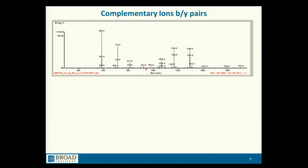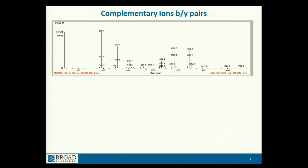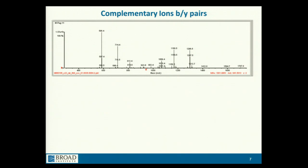This is what a spectrum looks like when it comes off the mass spectrometer — just a bar chart with mass labels. Software goes and interprets that. The mass axis is M over Z. These are MS-MS spectra; the precursor ion measurement is positioned where that little caret is. The charge of the peptide is shown here; the precursor in its singly charged form is here, and the multiply charged form is here.